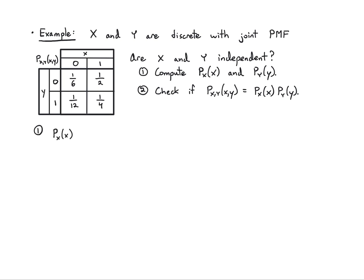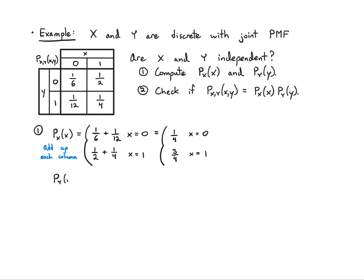To get the marginal PMF of X, I add up each column. I get 1/6 + 1/12 = 1/4 for X = 0, and 1/2 + 1/4 = 3/4 for X = 1. For the marginal of Y, I add up the rows: 1/6 + 1/2 = 2/3 for Y = 0, and 1/12 + 1/4 = 1/3 for Y = 1. Both marginals have proper normalization.